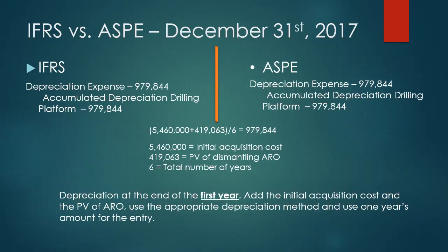The third entry is made at December 31st, 2017 and relates to depreciation. All assets depreciate in value, so you record depreciation expense and accumulated depreciation on the drilling platform. You take the initial acquisition cost plus the present value of the asset retirement obligation and divide by the total number of years: $5,460,000 plus $419,063 equals $5,879,063 divided by 6 gives a depreciation expense of $929,844. Debit depreciation expense, credit accumulated depreciation — drilling platform.